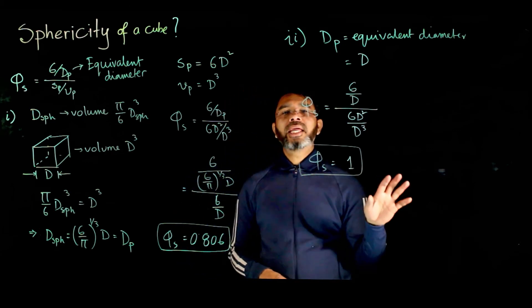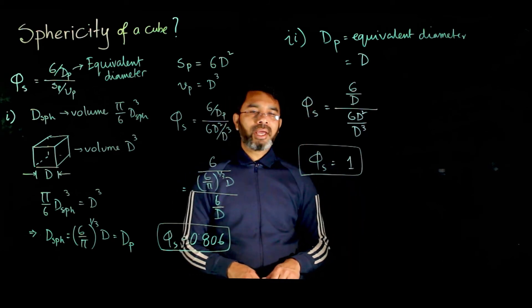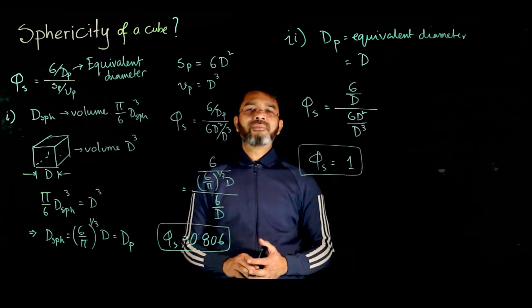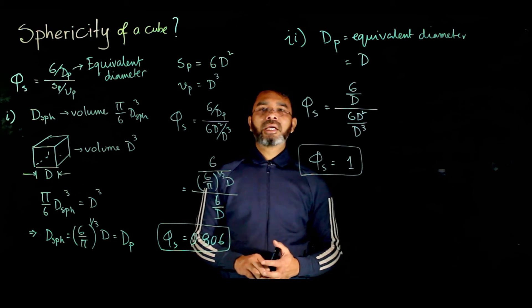However, when you are considering irregular shape particles, typically it is defined in one way. For example, when you are doing screen analysis, the equivalent diameter is defined on the basis of the screen size, and that is maintained consistently.